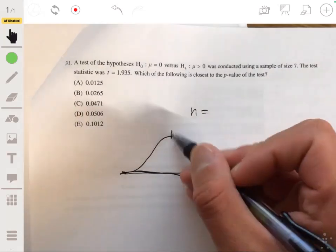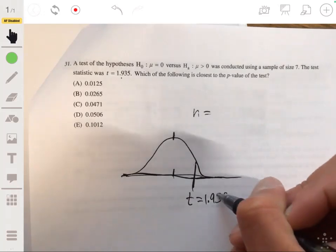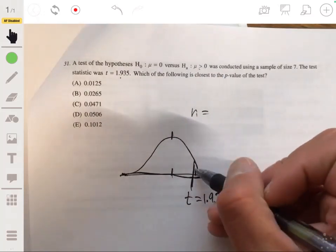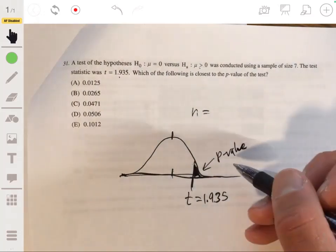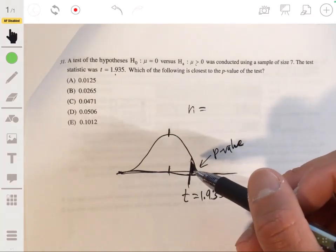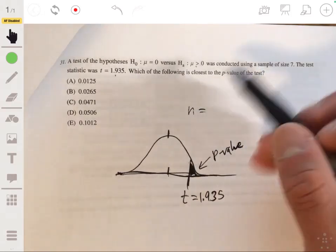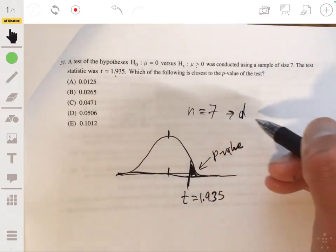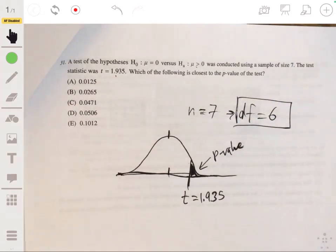So your T distribution, 1.935. So since we say greater than mu, we're looking at one sided, the area to the right. We want to find this value. What is this area? So then you have to look at the distribution of a T distribution with degrees of freedom equal to N minus one. So since N is seven, degrees of freedom is six.